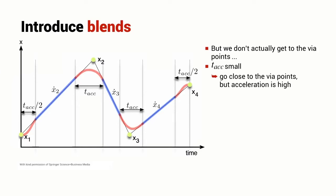Well, this is just a bit of a trade-off. If the acceleration time is very small then we will go very close to the via points but the acceleration will be very high. We're going to have to head towards x2 and then very quickly change our velocity into the velocity we need to head towards x3.